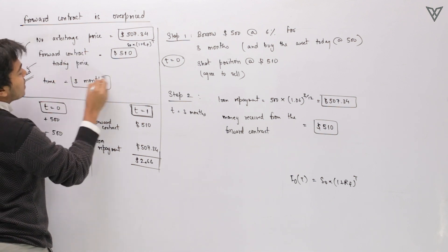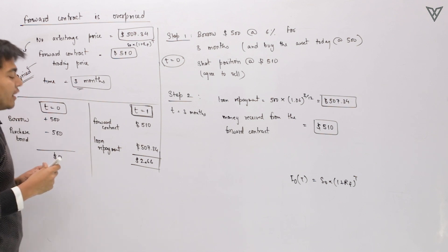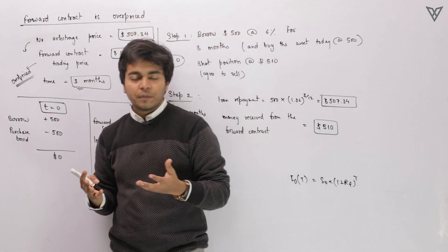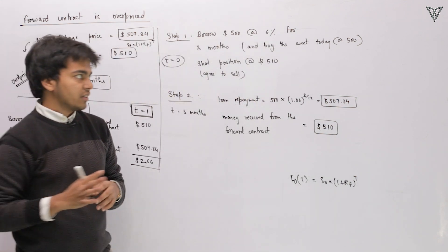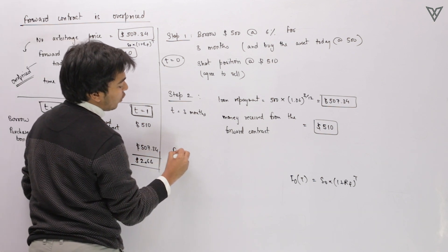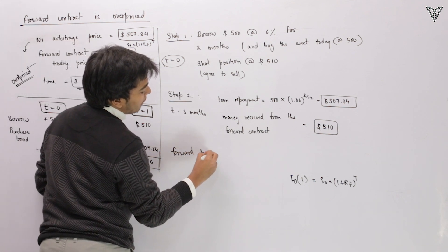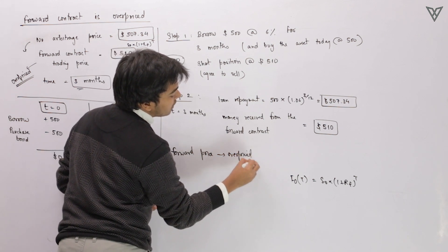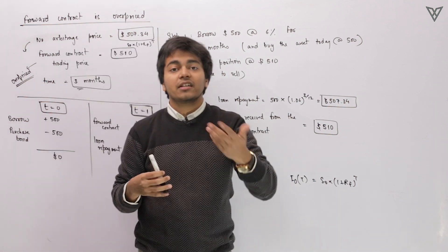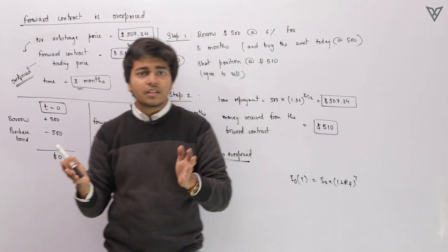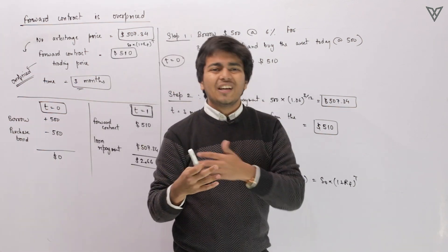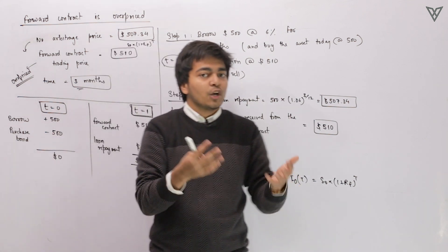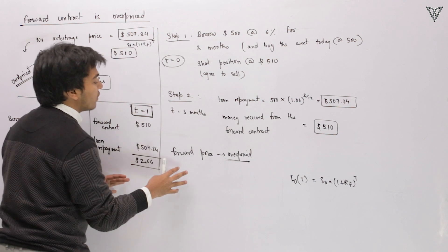The forward contract we are talking about has a time duration of 3 months. In this case you can definitely exploit the arbitrage opportunity. Whenever things are overpriced in arbitrage, you sell that thing — not just in forward contracts but in real life as well. If any asset class is overpriced, you sell that asset, and if any asset is underpriced, you buy that asset. Here the forward contract is overpriced.